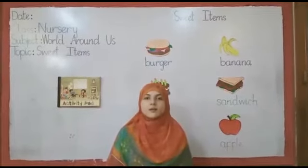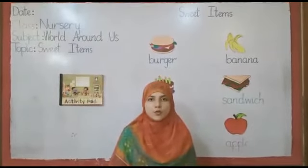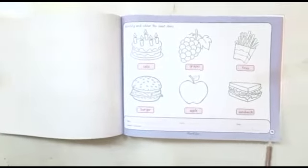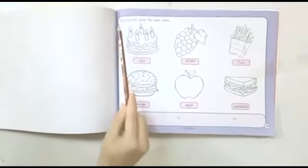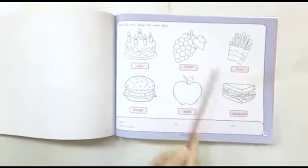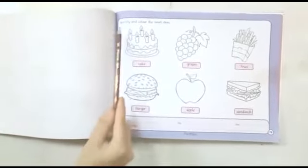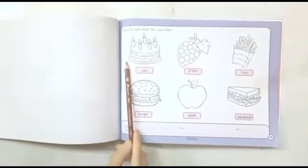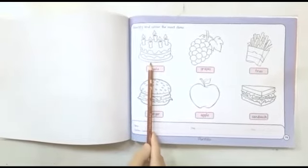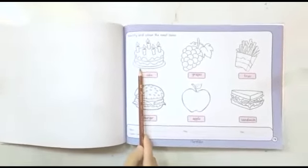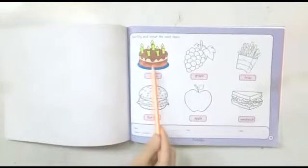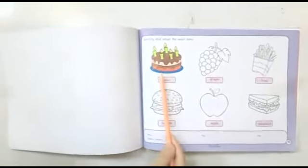अब इसी topic से related activity करेंगे. So you have to open your activity pad. This is your activity pad, page number 76. Your activity is: identify and color the sweet items. आपने इन सब में से sweet items identify करना है और फिर उनमें color करना है. Your first picture is cake. Cake is sweet, so you have to color in cake like this. You should do different colors in cake.